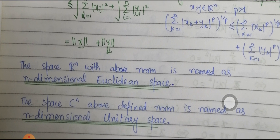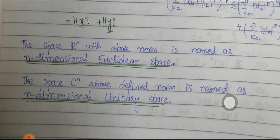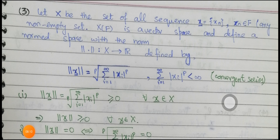The space ℝⁿ with this norm is called the n-dimensional Euclidean space, and the space ℂⁿ with the above-defined norm is called the n-dimensional unitary space. Example 3: Let X be the set of all sequences over a field F. X(F) is a vector space, and we define a norm ‖x‖ = (∑ᵢ₌₁^∞ |xᵢ|ᵖ)^(1/p), where the sum must be less than infinity.